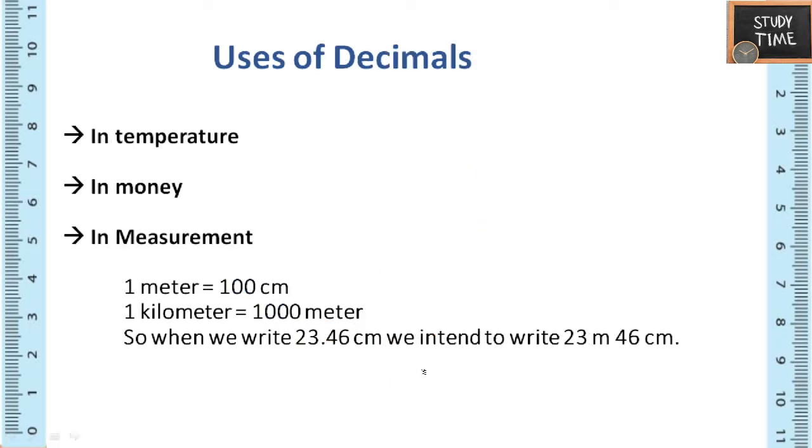Where will we use these kinds of decimals? Uses of decimals is in temperature, in money, in measurement. So in measurement, 1 meter equals 100 centimeters, 1 kilometer equals 1000 meters. So when we write 23.46 centimeter, we intend to write 23.46 centimeter.